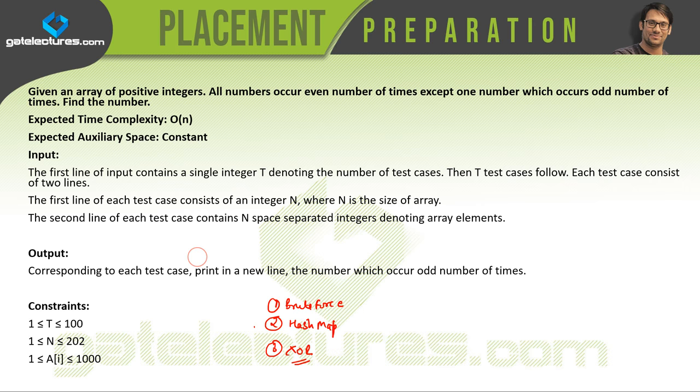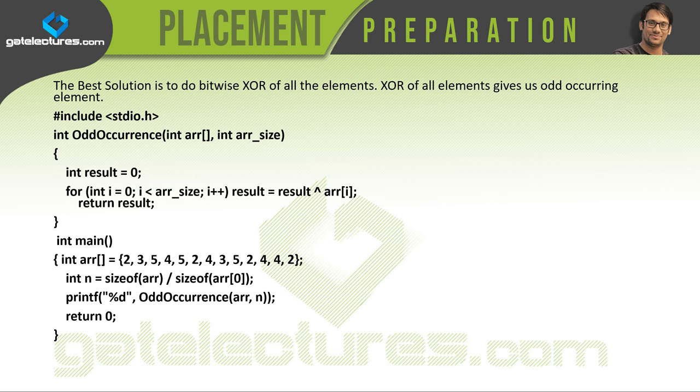Now in this video I'm going to show you the C language program which will do an XOR of every element and it will show whether there exists any number which is occurring odd number of times or not.